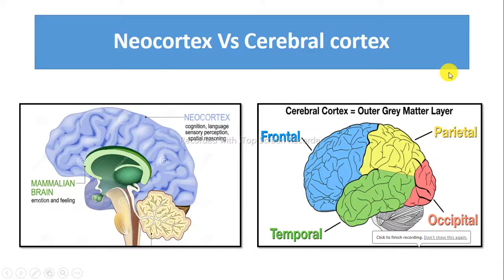Now we will see the differences between neocortex vs. cerebral cortex. Neocortex is the largest part of cerebral cortex, whereas cerebral cortex is the outer part of the cerebrum.